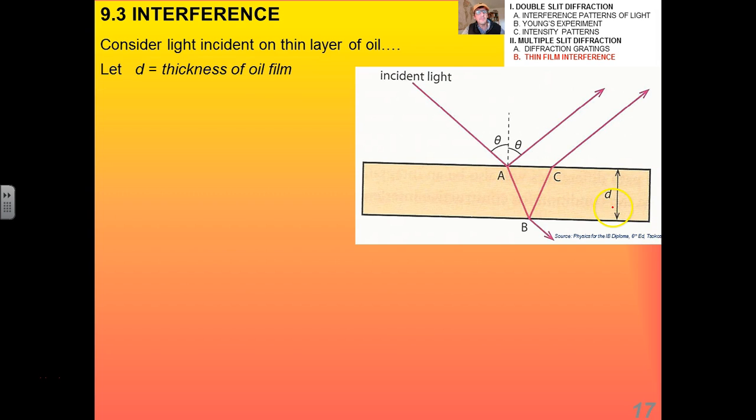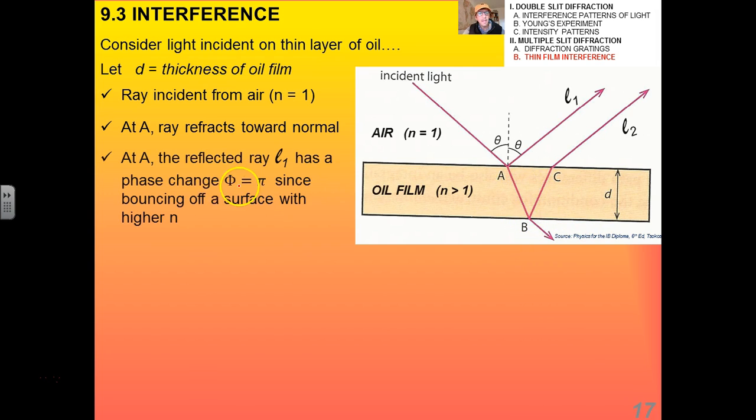There's actually a phase change of π when there's reflection at the top surface. If we consider this to be a thin layer of oil, if we let little d equal the thickness of the oil film, the ray is incident from air. This is air and this is oil. So, at A, two things happen. There's a reflected light ray that goes that way. And there's a refracted light ray that goes to B. That line segment AB shows the path. The thicker d, the farther over to the right B would be. Now, you know that for air, the index of refraction is 1. For an oil film, everything has a greater index of refraction than 1. The more opaque a substance, the greater that number.